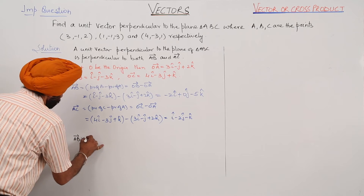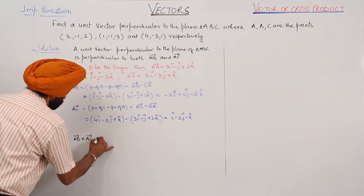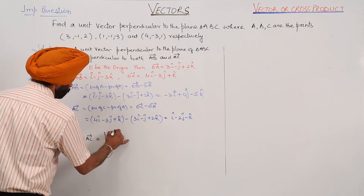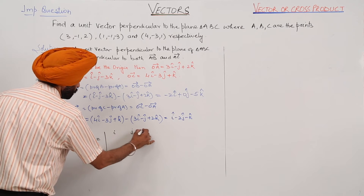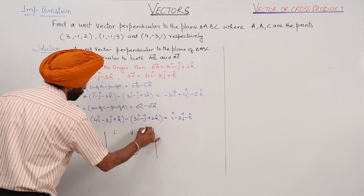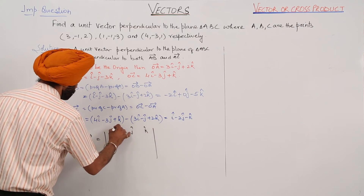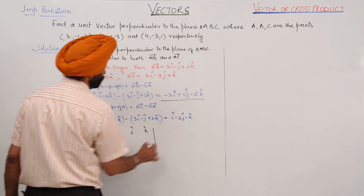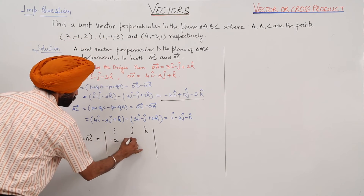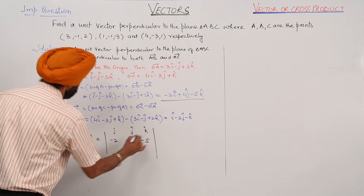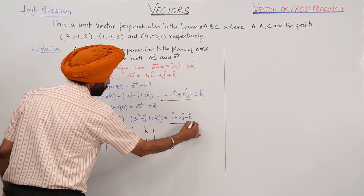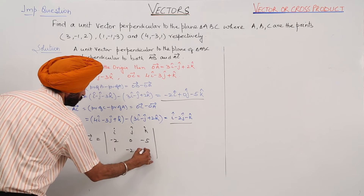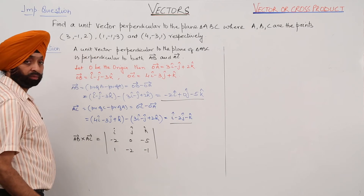Now we compute vector AB cross vector AC, writing it in determinant form with i, j, and k caps. AB has components minus 2, 0, and minus 5, and AC has components 1, minus 2, minus 1.